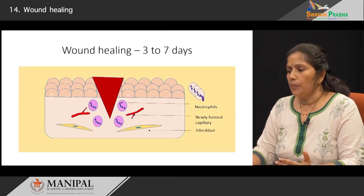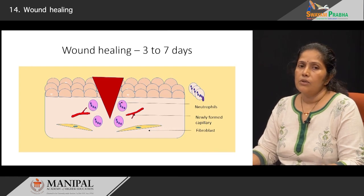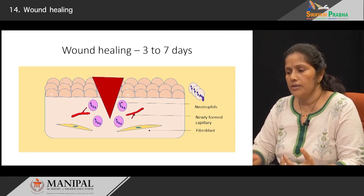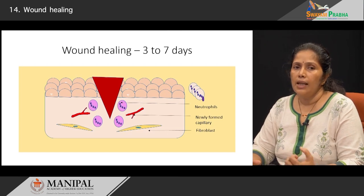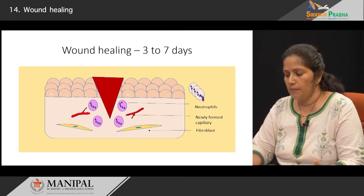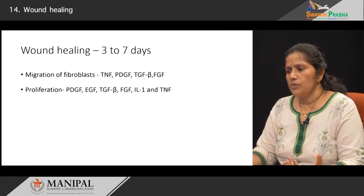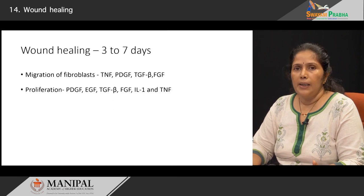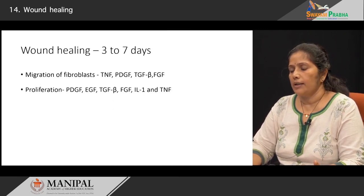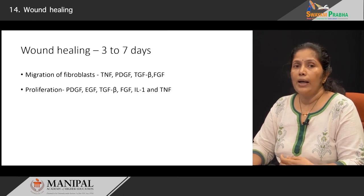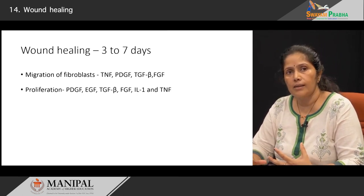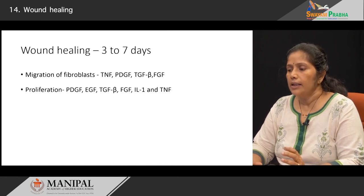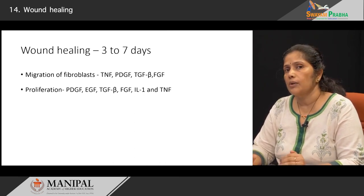Another important thing which happens as the days pass — for anywhere between 3 to 7 days — is the release of a large amount of inflammatory mediators. These inflammatory mediators bring in fibroblasts. The migration of fibroblasts is helped by tumor necrosis factor, platelet-derived growth factor, transforming growth factor, and fibroblast growth factor. The proliferation of these fibroblasts is mediated by a range of growth factors: PDGF, transforming growth factor, EGF, interleukins, and tumor necrosis factor.